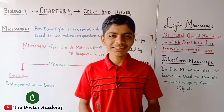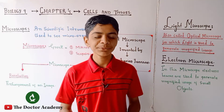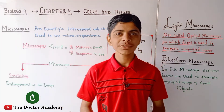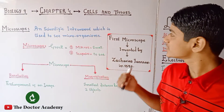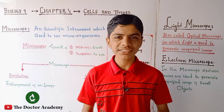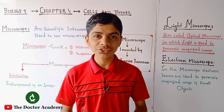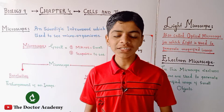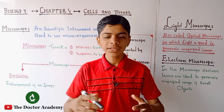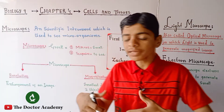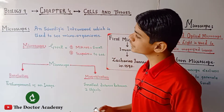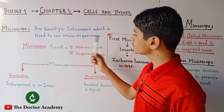Assalamu alaikum to all of you, myself Amanullah from the Doctor Academy YouTube channel. In this new lecture of ninth biology, we are going to start a new chapter which is chapter number four, and its name is Cells and Tissues. Today in this new lecture, I am going to discuss a most important and basic topic of chapter number four, which is: what is a microscope and its types? A microscope is a scientific instrument which is used to see microorganisms.